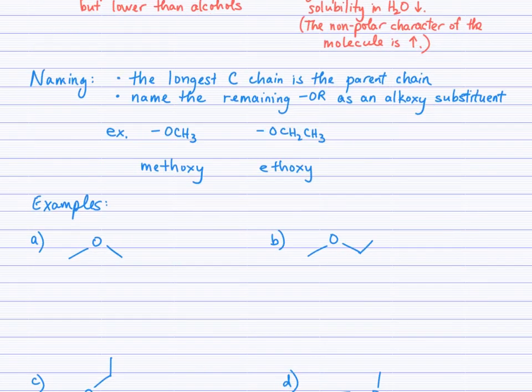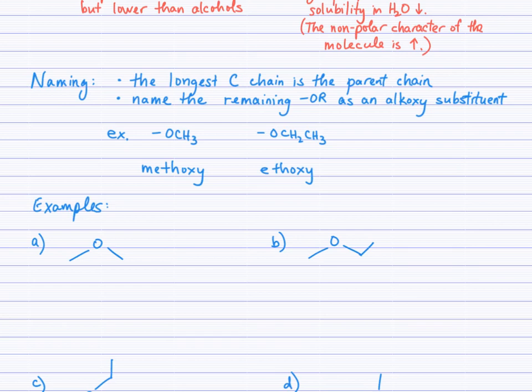So naming these structures, for some reason, this is a tricky one. People do find this one difficult to remember, and partially that might be because we don't do a lot with ethers, and so it's a smaller component of your practice. But very simply, the longest chain, I should say, the longer carbon chain, is the parent chain. And we'll just name the remaining oxygen bonded to the other R group as an alkoxy substituent, meaning side group. So if you have an OCH3, that will be a methoxy side group. If you have OCH2CH3, that will be an ethoxy side group.